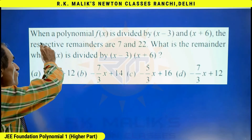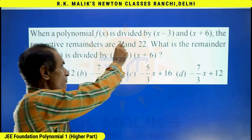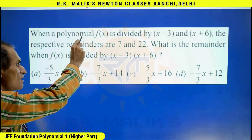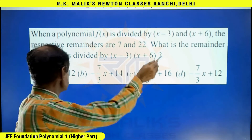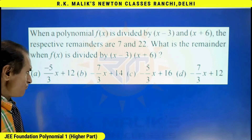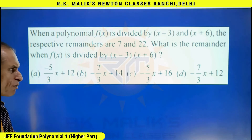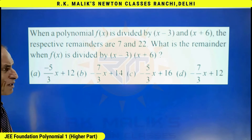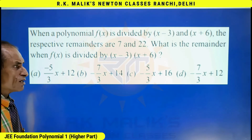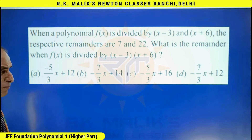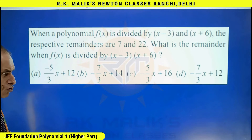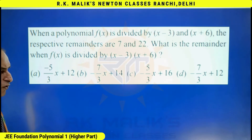In this question, it is given that when a polynomial f(x) is divided by (x-3) and (x+6), the respective remainders are 7 and 22. What is the remainder when f(x) is divided by (x-3)(x+6)? As I have clearly told in the name of the video, my solutions will be different from normal solutions. I will give you the smart way of solving, but first you will have to understand the normal way also.